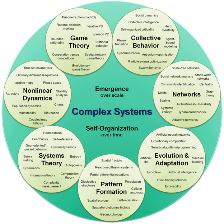Systems ecology is an interdisciplinary field of ecology, a subset of earth system science, that takes a holistic approach to the study of ecological systems, especially ecosystems. Systems ecology can be seen as an application of general systems theory to ecology. Central to the systems ecology approach is the idea that an ecosystem is a complex system exhibiting emergent properties. It uses and extends concepts from thermodynamics and develops other macroscopic descriptions of complex systems.